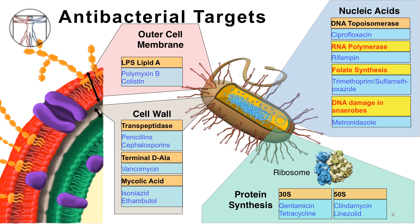As mentioned, the fluoroquinolones were discussed in part one of antibiotics that target nucleic acids. In this part two video, we will focus on the RNA polymerase inhibitors, the folate synthesis inhibitors, and the DNA damagers, all highlighted in yellow in the upper right corner.